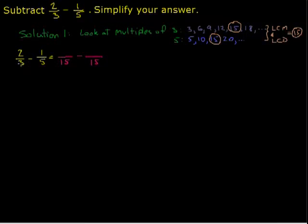But in order to get to 15, we have to multiply. Let's change the color here. Going from 3 to 15, we had to multiply 3 times 5. So that means we're also going to multiply the numerator by 5. And then, going from 5 to 15, we multiplied by 3. So that means we need to multiply the numerator by 3 as well.